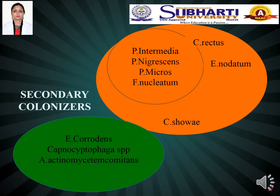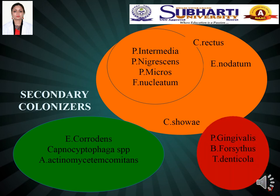Coming to the secondary colonizers: they consist of the orange complex, the green complex and the red complex. After the primary colonizers have attached themselves and bonded with the pellicle layer, secondary colonizers colonize on the already colonized primary colonizers. Meaning they do not directly attach to the tooth surface; instead they bind with already bound primary colonizers. That is why they are known as secondary or late colonizers.